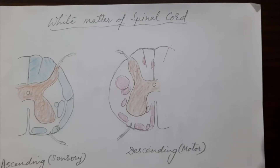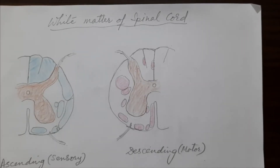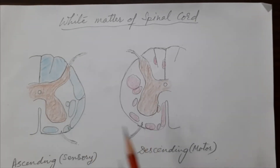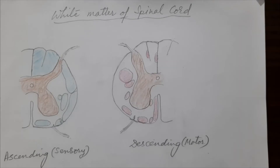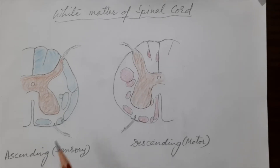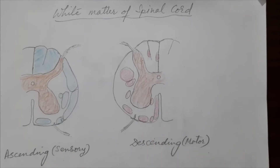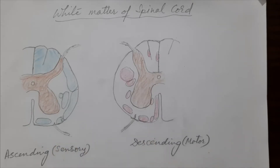Good evening, students. This is the fourth video on the spinal cord. In this short video, we will learn about the white matter of the spinal cord. I have drawn two diagrams for the white matter: in one section the ascending tracts are shown, and in the other diagram we will learn about the descending or motor tracts. The white matter of the spinal cord is organized in broad areas called funiculi.